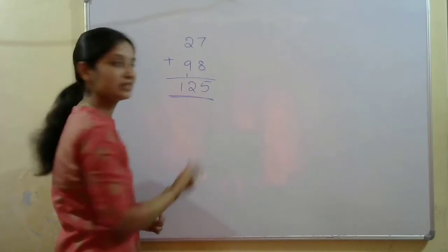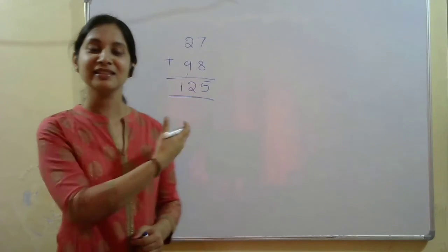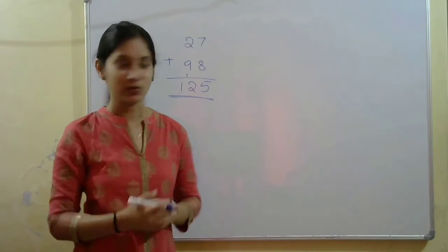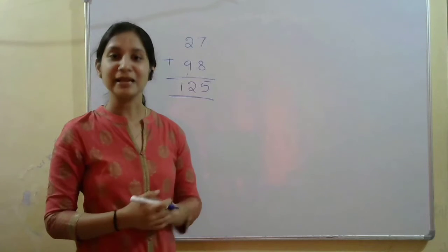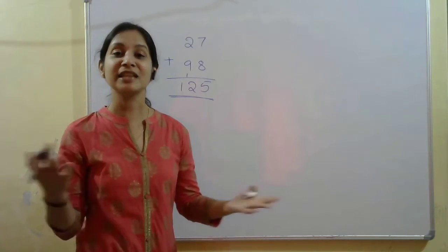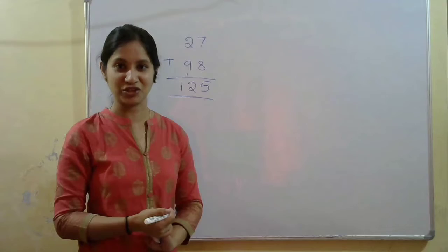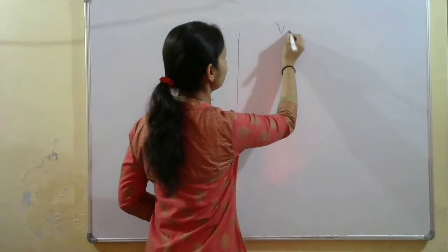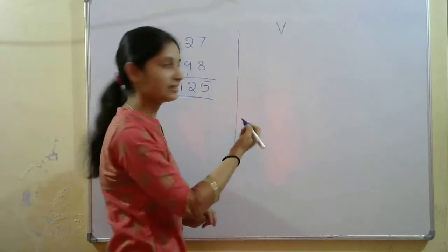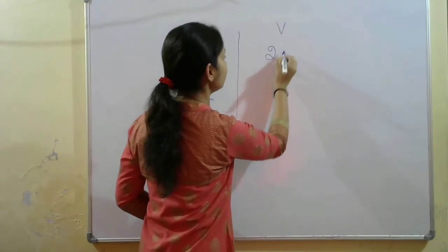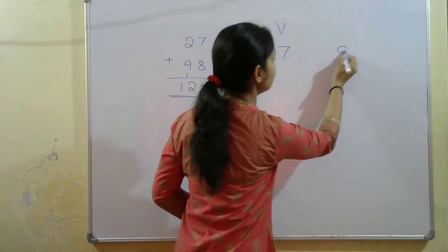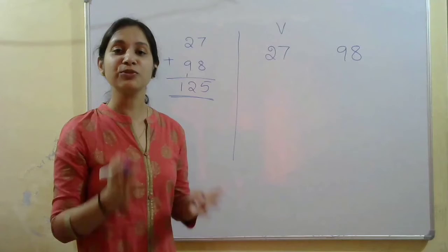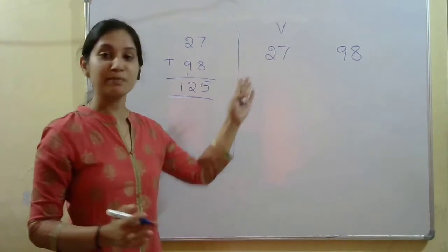So 125 is our answer using the conventional method. But for this you need pen and paper. Vedic math tricks help you solve the problem mentally. Now let us learn the Vedic math steps — I will write V for this. We write 27 and 98, and our first step is to find the nearest multiple of 10 for each given number.